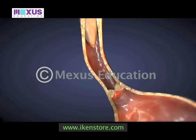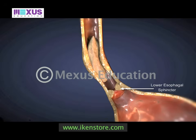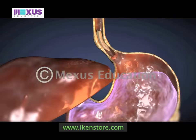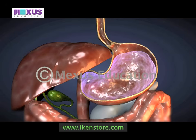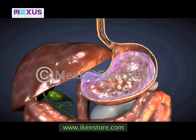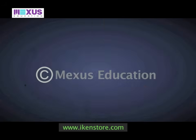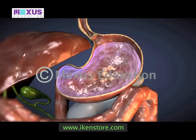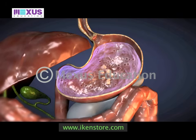When the food reaches the entrance of the stomach, a sphincter known as the lower esophageal sphincter relaxes and the food enters the stomach. The stomach contains gastric juices that break the food into smaller particles or molecules. The hydrochloric acid present in the stomach converts the food into chyme, which now passes into the small intestine.